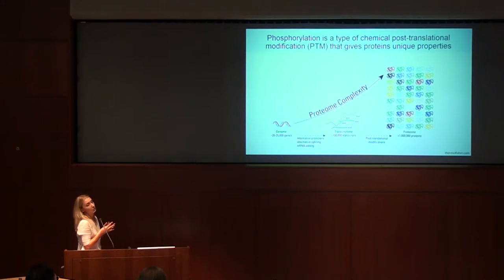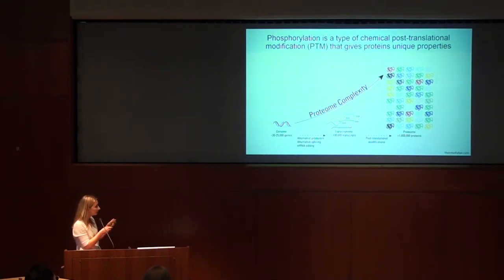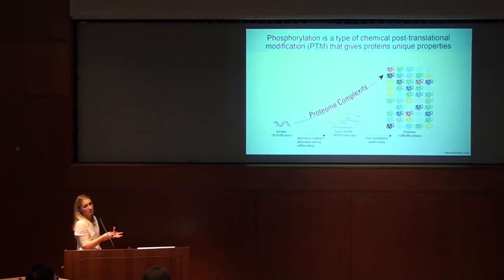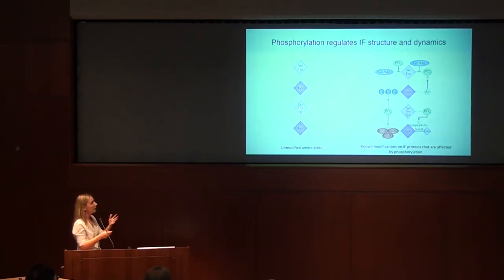One potential way to prevent the growth of Rosenthal fibers is to interfere with the phosphorylation of GFAP. Phosphorylation is the addition of a phosphate group to a protein — a type of post-translational modification, meaning it happens after the protein has been made from its messenger RNA. You start with around 30,000 genes, but there are millions of protein versions. One way to get this protein complexity from one gene is through these post-translational modifications. I'm very interested in how the processes that control the addition of these groups affect the character of the protein.